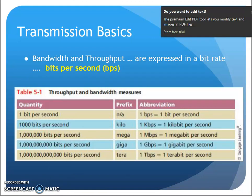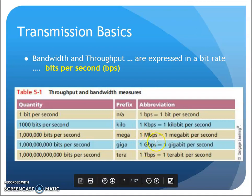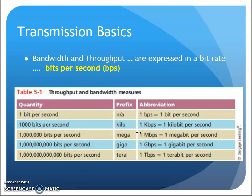We measure throughput in bits per second. Remember your prefixes: 1000 bits per second is kilobits — 1 kilobit is 1000 bits per second. Megabits is million bits per second. Gigabit is billion bits per second. And tera is trillion bits per second. Most things we deal with in bandwidth are in the megabit and gigabit range — 100 meg link, 1000 meg or gigabit link, or 10 gig link. That's typically where we'll find most of our throughputs at this point in time.